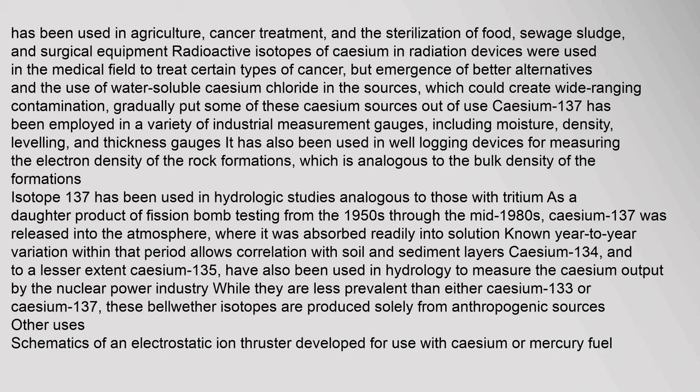Isotope ¹³⁷Cs has been used in hydrologic studies analogous to those with tritium. As a daughter product of fission bomb testing from the 1950s through the mid-1980s, caesium-137 was released into the atmosphere, and its known year-to-year variation allows correlation with soil and sediment layers. Caesium-134 and, to a lesser extent, caesium-135 have also been used in hydrology to measure caesium output by the nuclear power industry, as these isotopes are produced solely from anthropogenic sources.